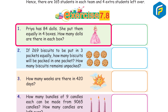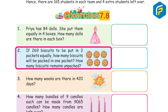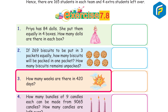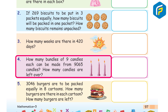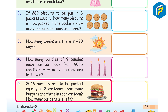Exercise 7.8. Question 1: Priya has 84 dolls. She puts them equally in 4 boxes. How many dolls are there in each box? Answer: 21. Question 2: If 269 biscuits are to be put in 3 packets equally, how many biscuits will be packed in 1 packet and how many remain unpacked? Answer: 89. Question 3: How many weeks are there in 420 days? Answer: 60. Question 4: How many bundles of 9 candles each can be made from 9065 candles, and how many are left over? Answer: 1007. Question 5: 3046 burgers are packed equally in 8 cartons. How many burgers in each carton and how many are left? Answer: 380.